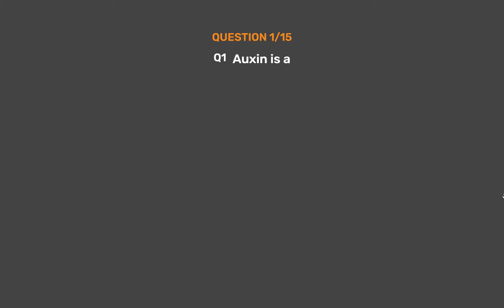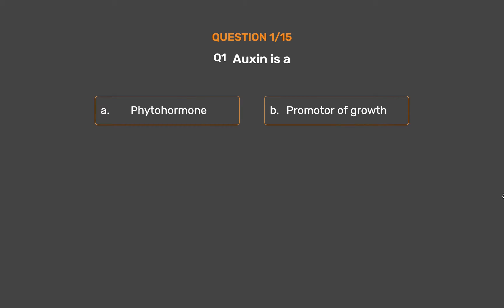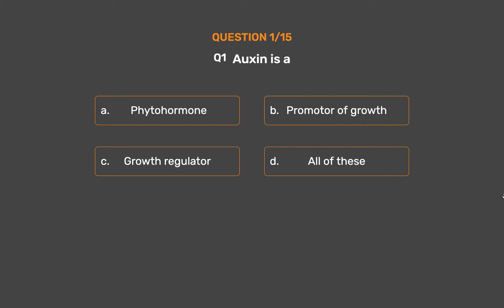Question No. 1. Auxin is: Option A - Phytohormone. Option B - Promoter of Growth. Option C - Growth Regulator. Option D - All of these.